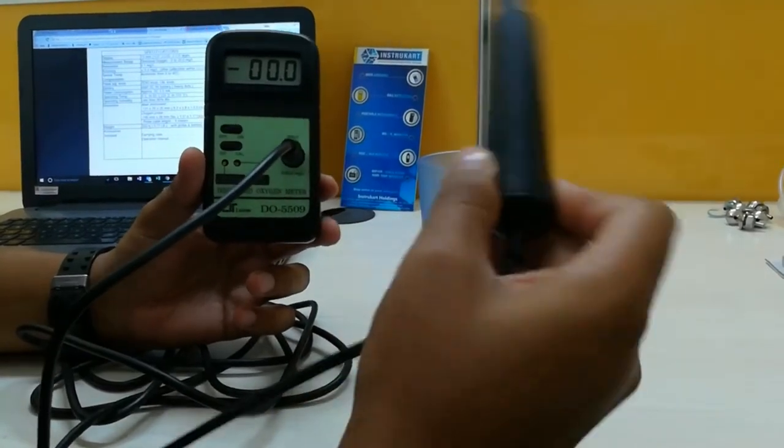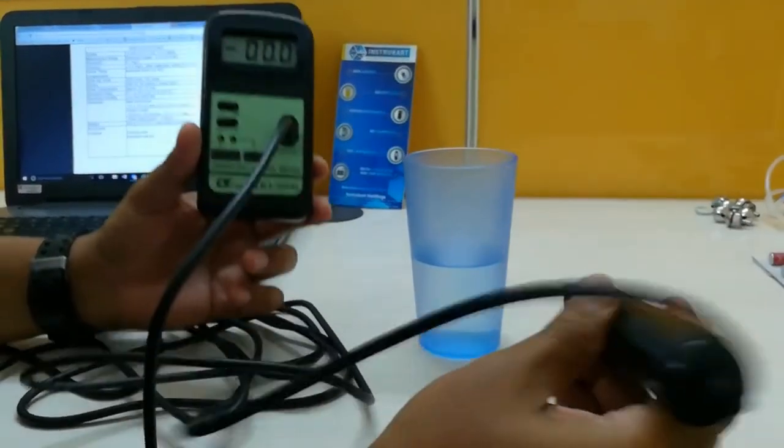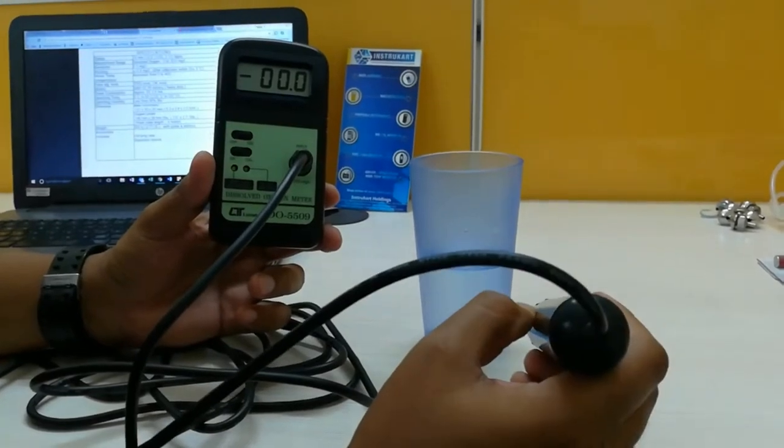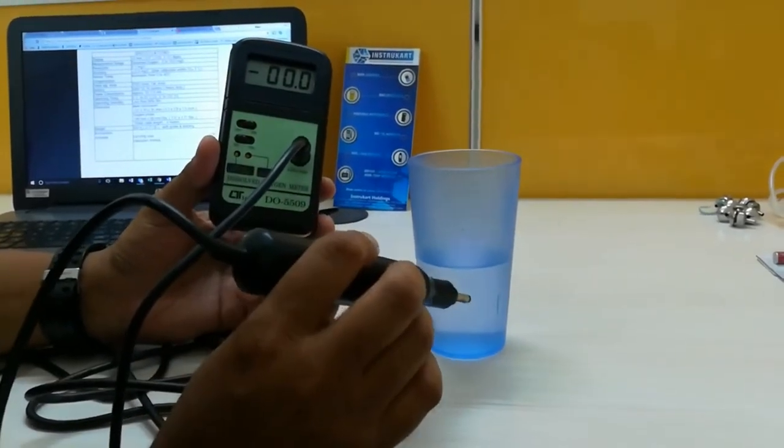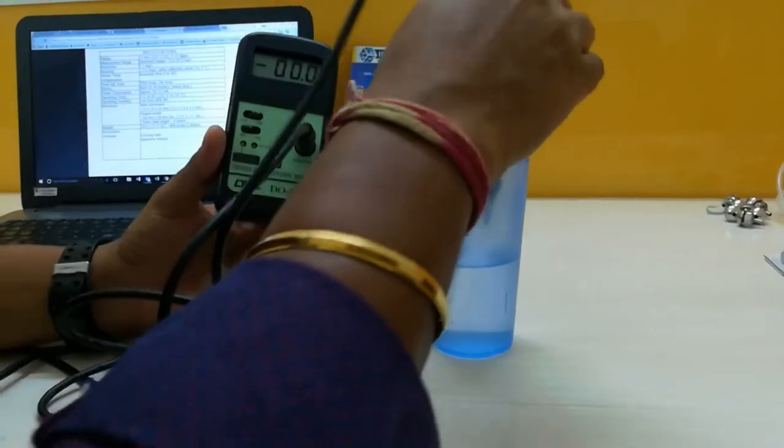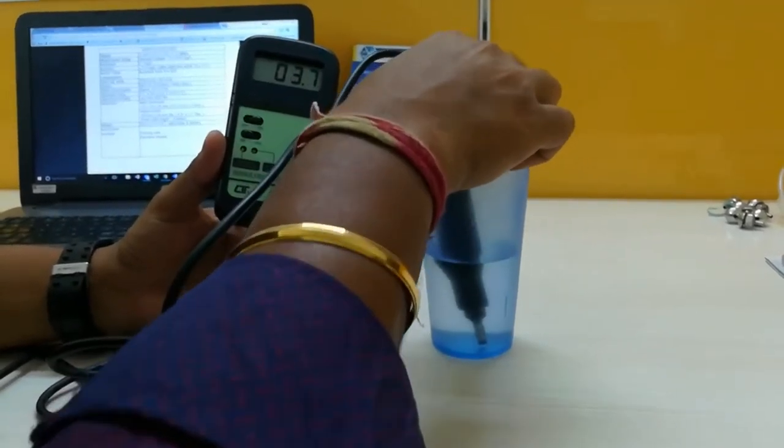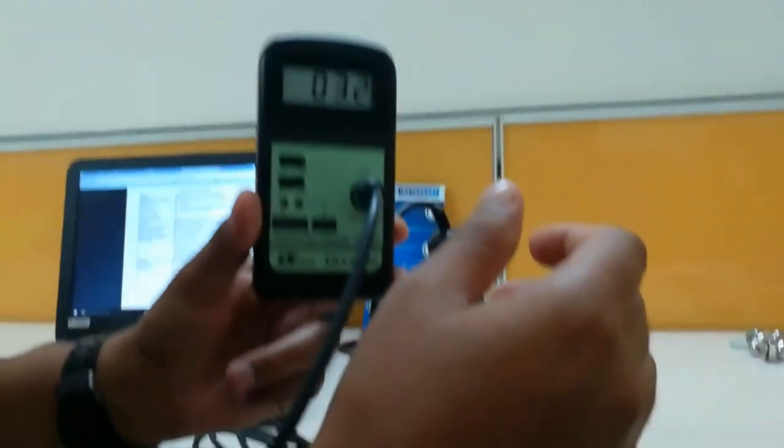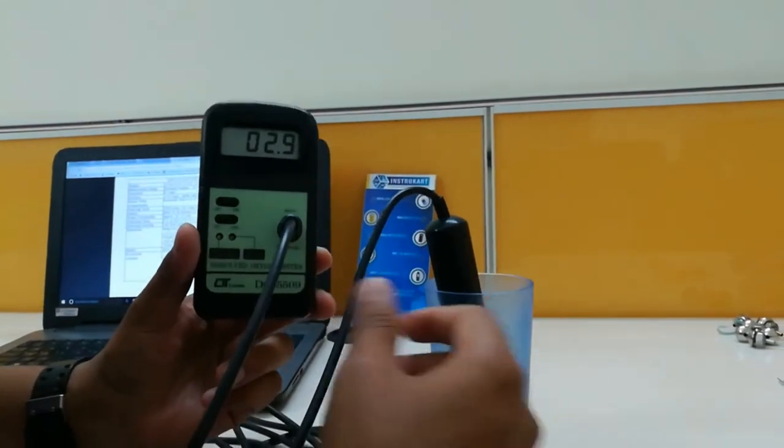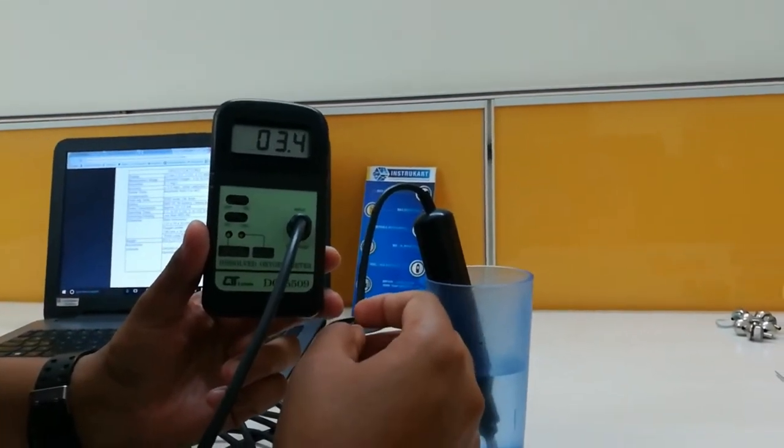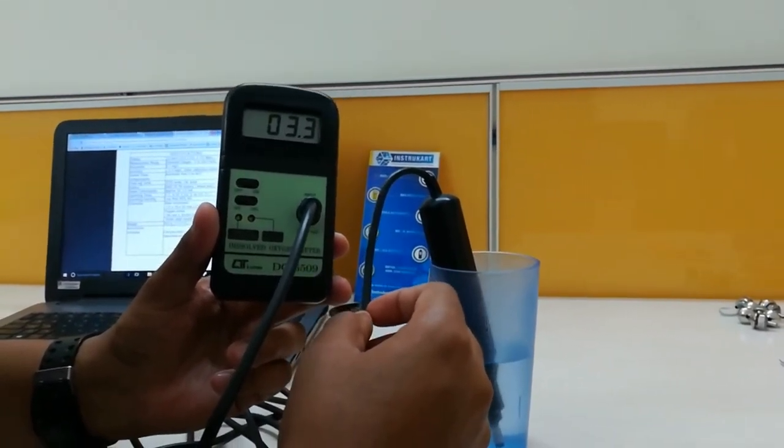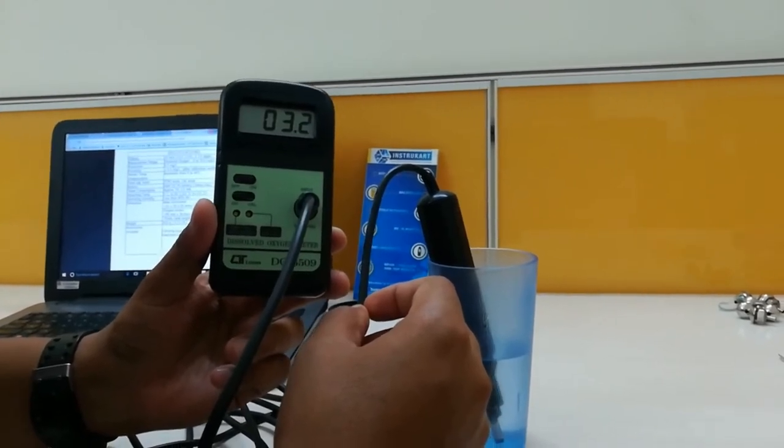We'll have a look at how the dissolved oxygen changes if we put it in a glass of water. This is fresh tap water and we'll see the change. You can see the dissolved oxygen level has changed to 3.3 mg per liter.